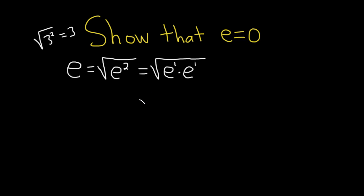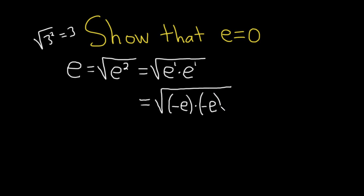The next step is a little bit funky, but it should be okay. So we have the square root of — now we're going to introduce a negative sign here. Instead of writing this as e times e, we're going to write it as negative e times negative e. Negative e times negative e is going to be e squared, because negative 1 times negative 1 is positive 1. So this is the same as what we had before — all is good.